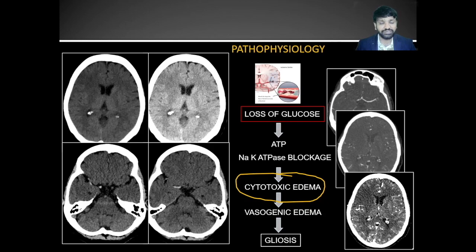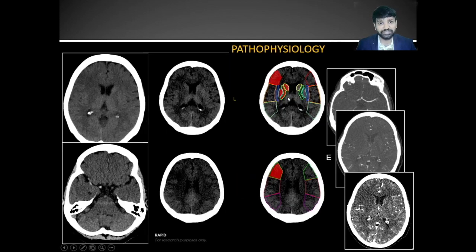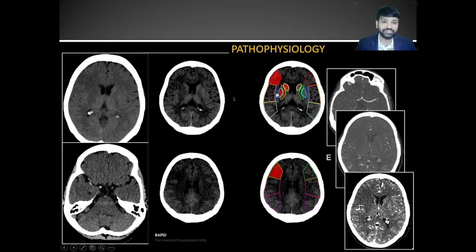When you appreciate acute infarcts, always try to give ASPECTS scoring. The overall MCA territory is given a 10-point scoring system. The central core structures account for four points: one for the caudate nucleus, one for the putamen, one for the internal capsule, and one for the insular cortex. Apart from the central core structures, the lateral areas are given six points — three at the basal ganglia level and three superior to the basal ganglia. Depending on the areas of involvement, you deduct from the 10-point score.